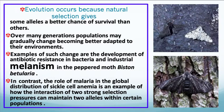Evolution occurs because natural selection gives a better chance of survival to some over others, and over many generations populations gradually change to become better adapted to their environments. Examples include the development of antibiotic resistance in bacteria and industrial melanism in the peppered moth. The role of malaria in the global distribution of sickle cell anemia is an example of how the interaction of two strong selection pressures can maintain dual alleles within certain populations. We're going to talk about each of these more specifically.